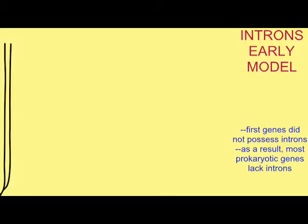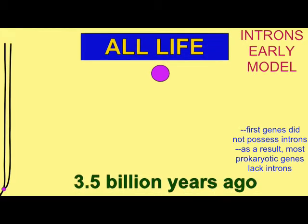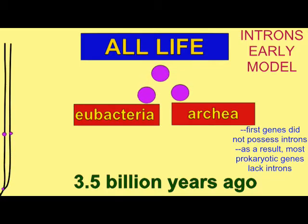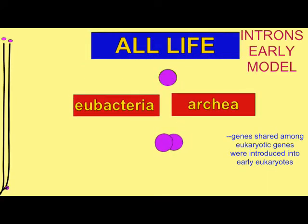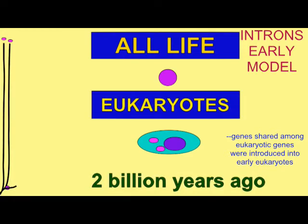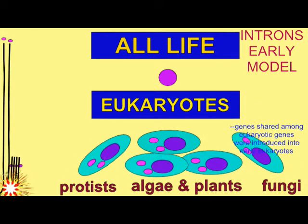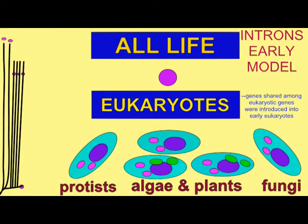In the introns-late hypothesis, introns did not exist in the first genes. Supporting this is the fact that most prokaryotic genes — and prokaryotes are the simplest forms of life — lack introns. It is known that specific introns have been introduced recently, at specific points in phylogenetic trees, and so they did not date from the origin of life or the origin of cells.